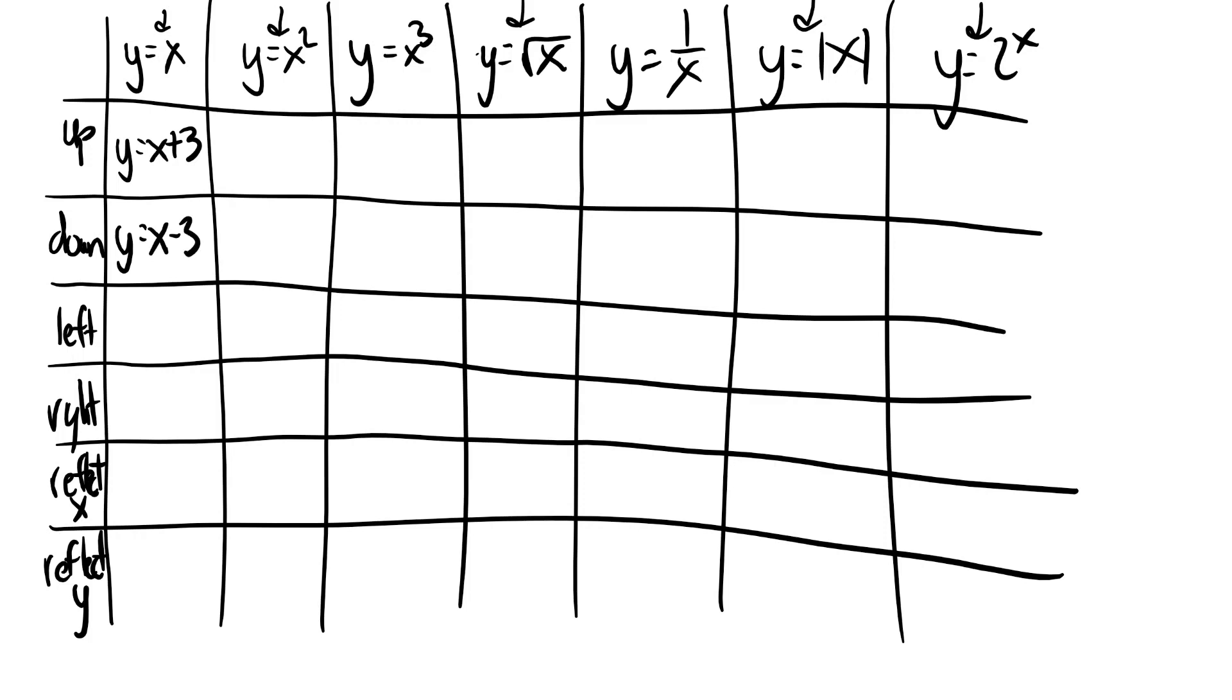Moving to quadratics, y equals x squared plus 3. On the outside, basically if you just tack a plus on the end, you're going up. If you tack a plus, or a negative, a minus, you're going down.